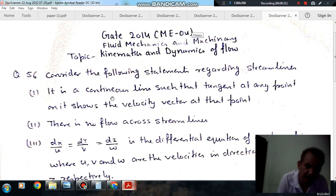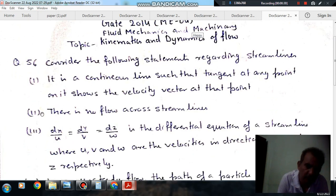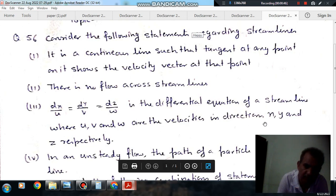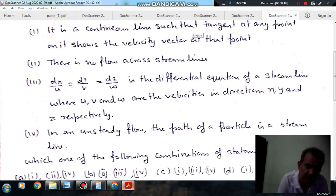Statement 1: It is a continuous line such that tangent at any point on it shows the velocity vector at that point. Statement 2: There is no flow across streamlines. Statement 3: dx/u = dy/v = dz/w is the differential equation of a streamline where u, v and w are the velocities in direction x, y and z respectively.